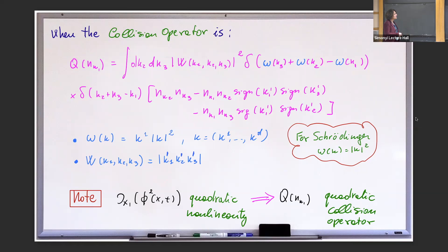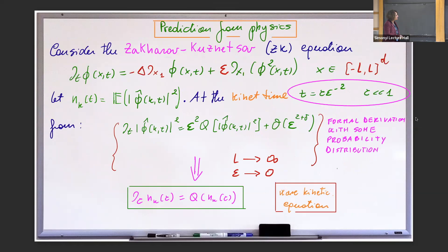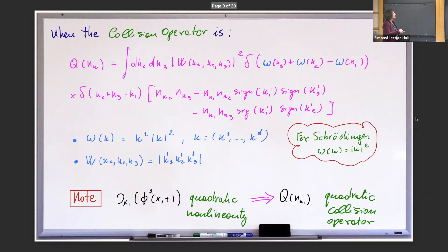This is how the equation looks. I can already announce that although this is the equation people use as the wave kinetic equation associated with this dispersal equation, mathematically you have to do something about the delta function because omega is not regular enough to define a good measure. And since you start with a quadratic nonlinearity, the collision operator is also quadratic. In fact, this is called the three-wave kinetic equation — three because you have one outgoing and two incoming. The one from Schrödinger is called four-wave.